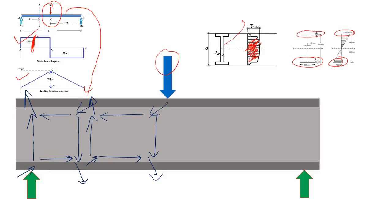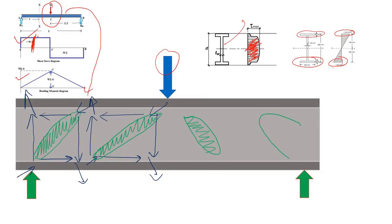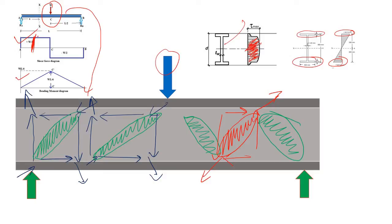You can draw the same for the right portion as well. If you mark the compressed zones, you can see that parts of the web are being compressed, and in the right portion similarly certain parts of the web are being compressed. In other zones, the complementary shear force results in a resultant tensile force, meaning those zones of the web are actually being tensed.